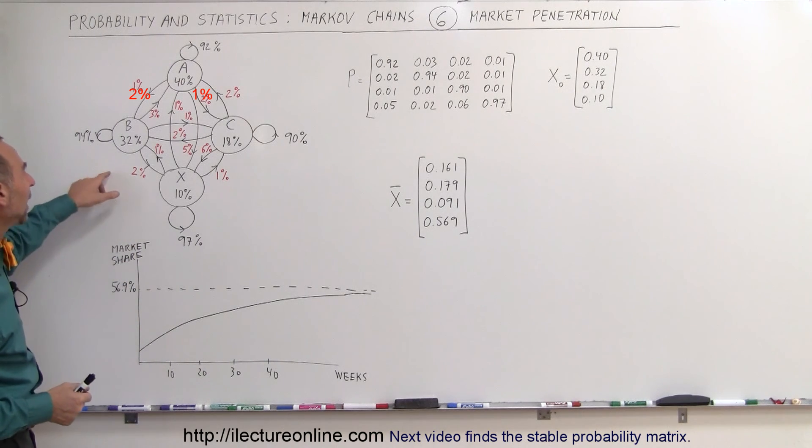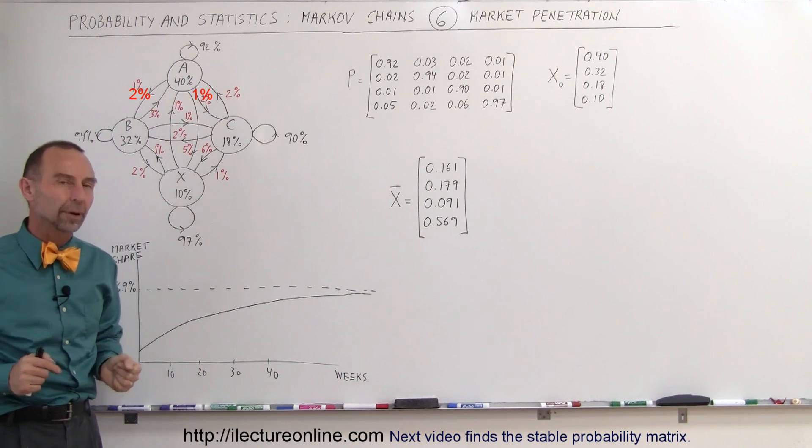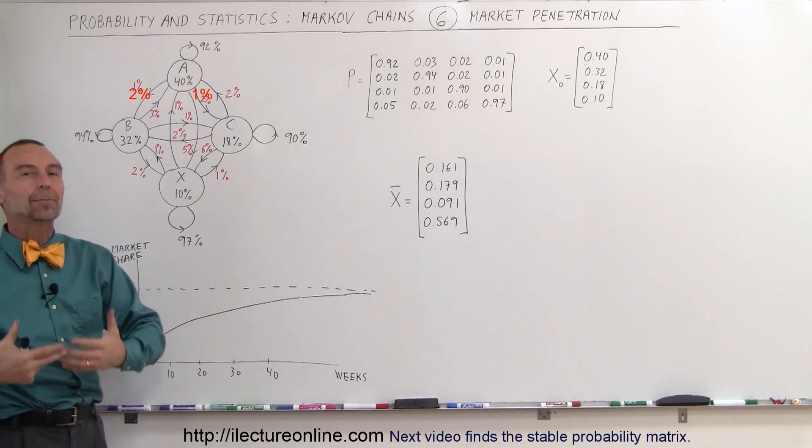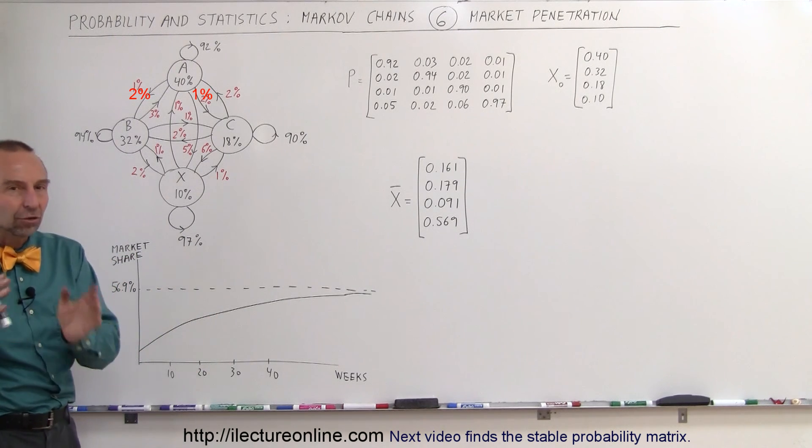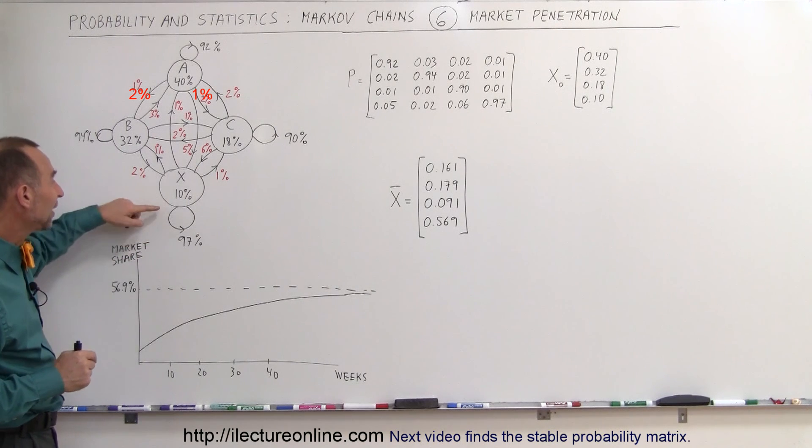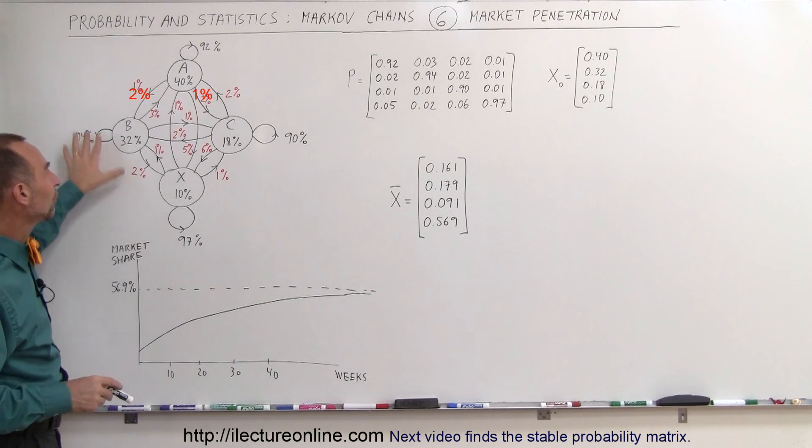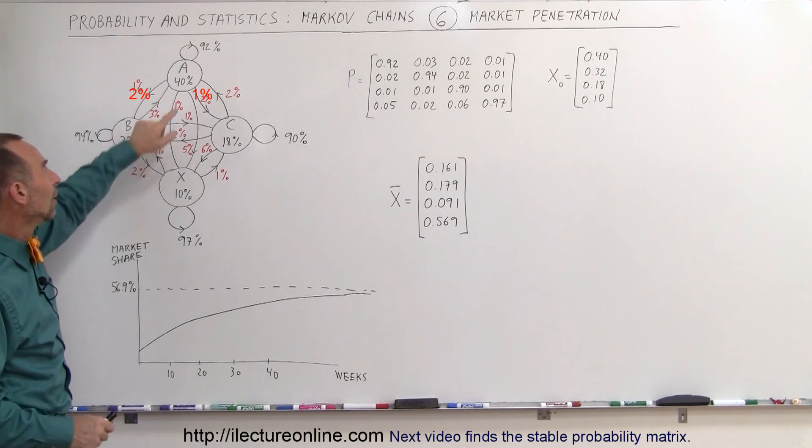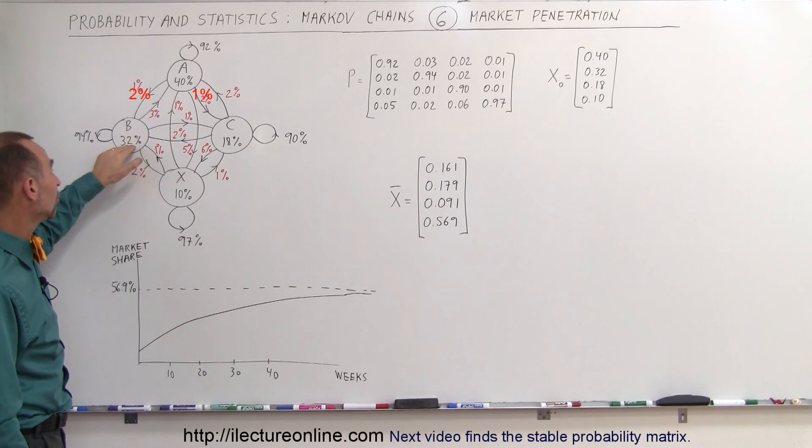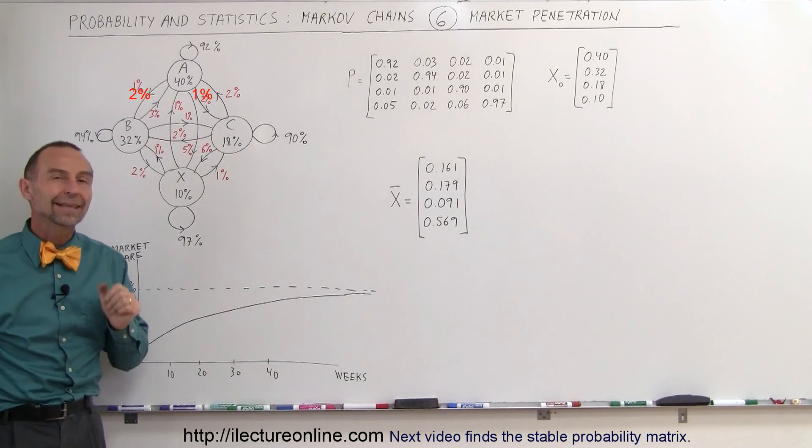Let's say we have four brands: brand A, B, C, and the fourth brand is our new brand X that we're introducing to the market. After some initial startup, giving off lots of samples and buying space on store shelves, we find we have a 10% penetration in the market. Brand A is still the most popular with 40% of the market, brand B 32%, brand C 18%, and brand X 10%.